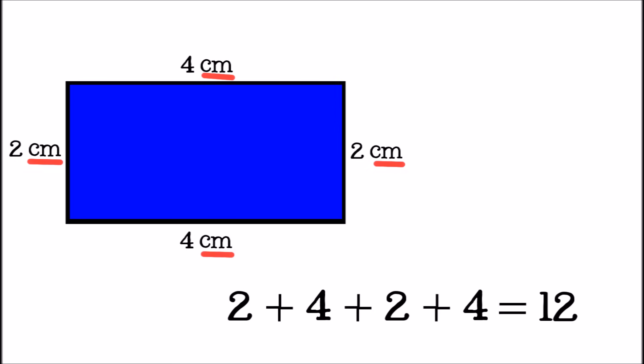This time we have a rectangle. Both of the short sides are two centimeters long. Both of the long sides are four centimeters long. To find the perimeter of the rectangle, we add up the length of all the sides. Two plus four plus two plus four equals twelve. Since the sides are measured in centimeters, the answer has to be measured in centimeters too. The perimeter of this rectangle is twelve centimeters.